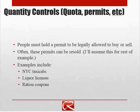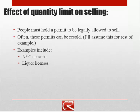Often these permits are going to be resold, and unless I say otherwise, I'm going to assume that. Let me first think about quantity limits on selling. If we have quantity limits on selling, then people are only allowed to sell as much of the good as they have a permit for. An example that economists love is the fact that to drive a taxi cab in New York City, you have to have what's called a taxi cab medallion.